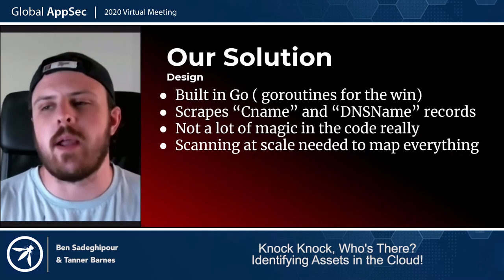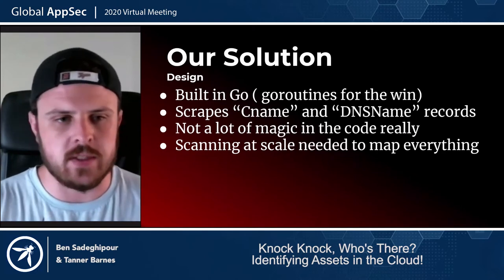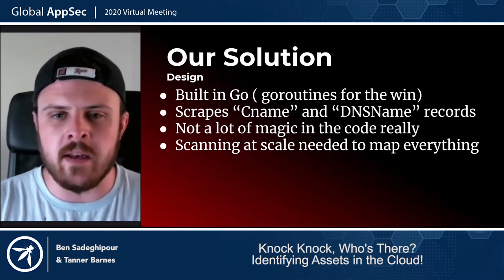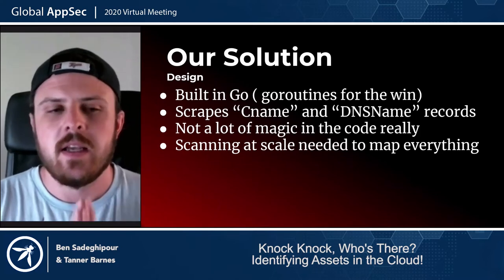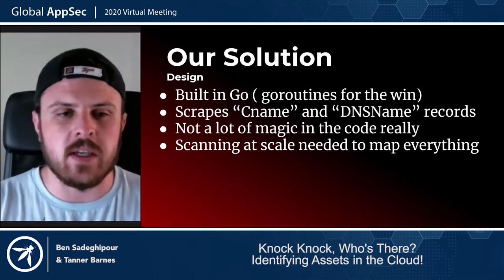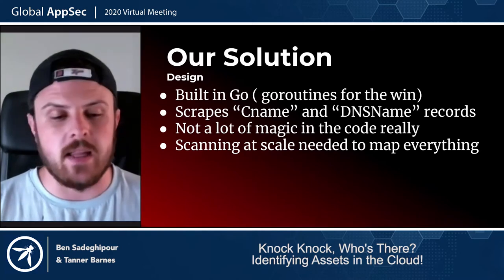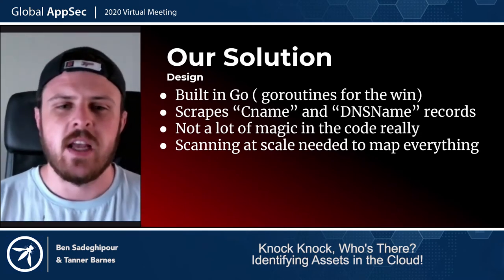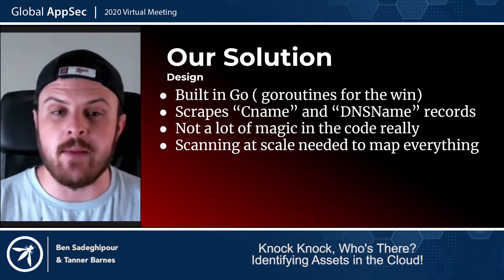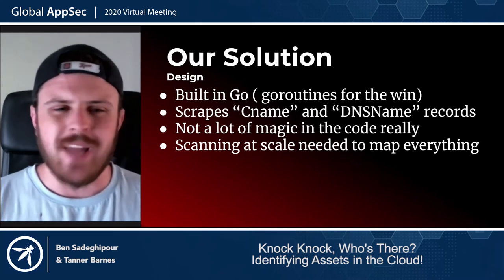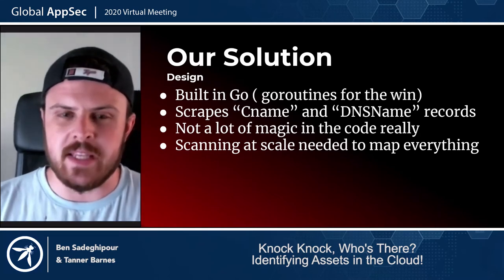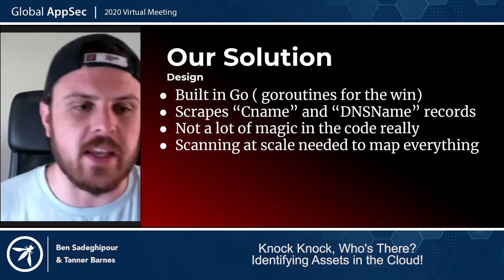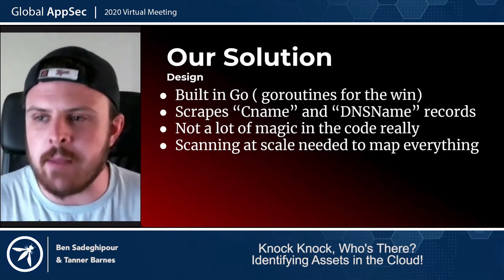Now we'll get into our solution — how we were able to get at those 88 million IP addresses. It's built in Go. Go routines are a huge win and a good way to make something like this happen. Go is incredibly concurrent and can really help you knock out a lot of concurrent workloads really simply. How it works is essentially a scraper for CNAME and DNS name records from TLS certificates. It's simple to write a scanner that can pull those from a certificate, but the issue is how do we scale that to tackle 88 million IP addresses?